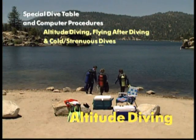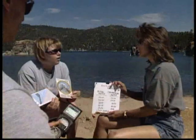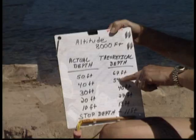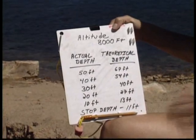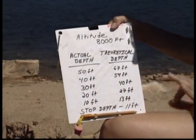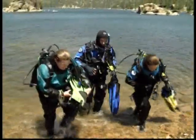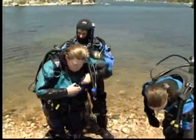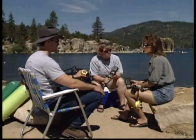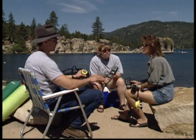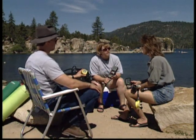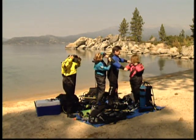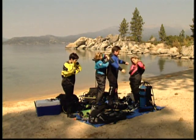Kiedy zwiększa się wysokość nad poziomem morza, ciśnienie atmosferyczne spada. Komputery i tabele nurkowe pokazują dane dla nurkowań prowadzonych na poziomie morza. W górach panuje niższe ciśnienie, więc pęcherzyki azotu powstają w tkankach łatwiej. Jeśli nurkujesz na wysokości przekraczającej 300 metrów nad poziomem morza, musisz korzystać ze specjalnych tabel oraz stosować odpowiednie procedury. Przed nurkowaniem w górach zasięgnij rady w swoim centrum nurkowym PADI lub u instruktora podczas kursu nurkowań górskich.